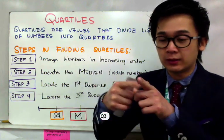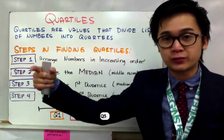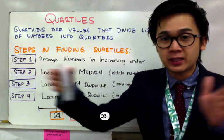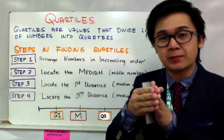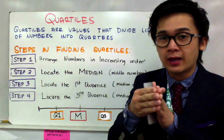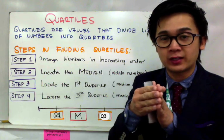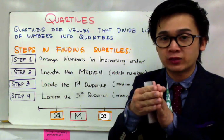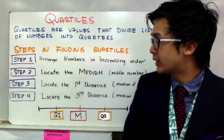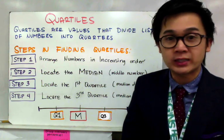The median — let's say you have listed your numbers from least to greatest. The median is basically the middle value of your numbers. All you need to do is count and find the middle value of the list of numbers, and you will find your median. That will be step number two for finding your quartiles.